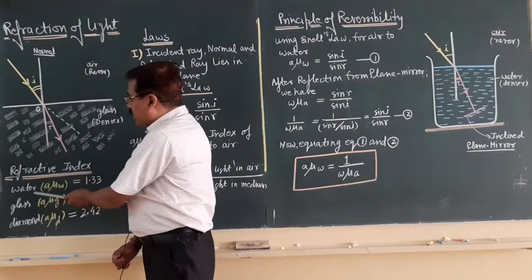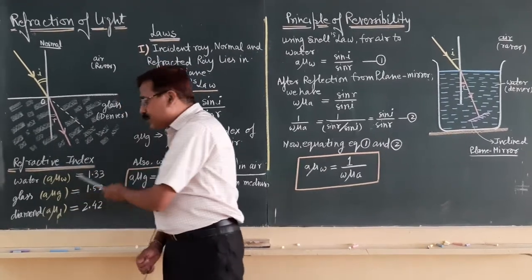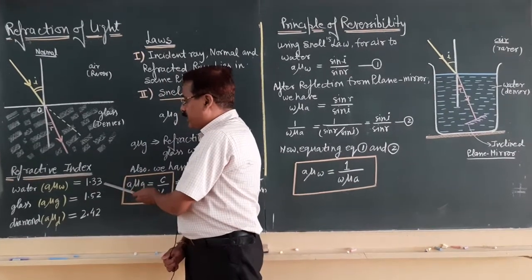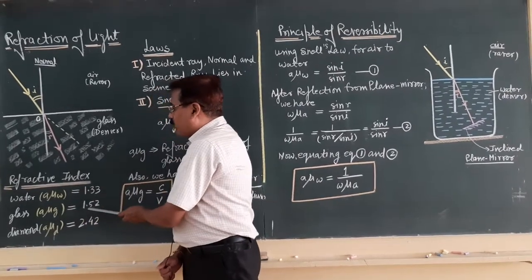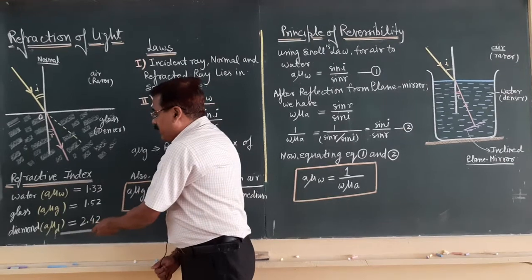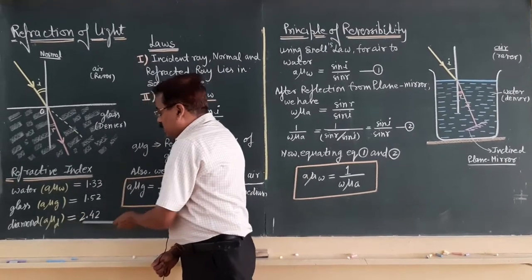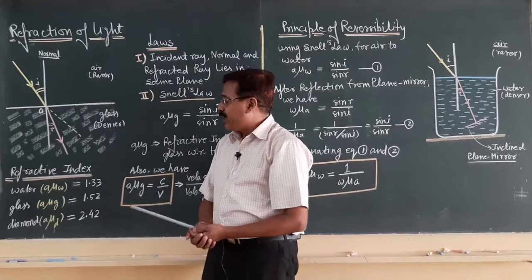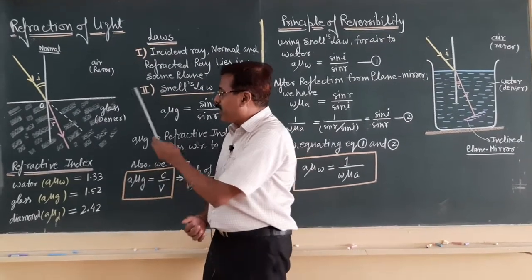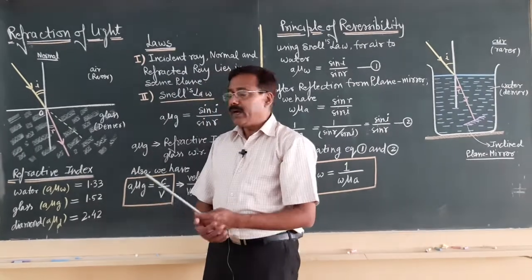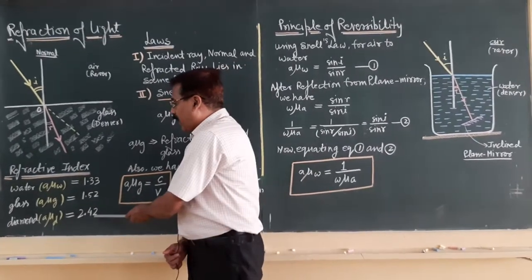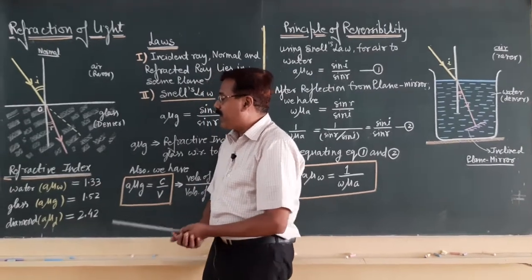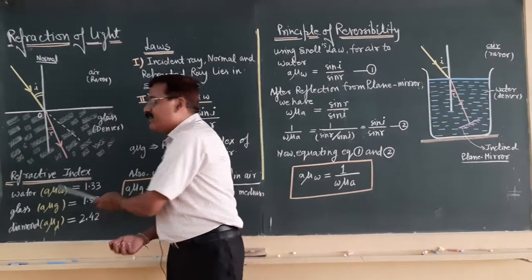The refractive index of water, glass, and diamond with respect to air are: a-mu-w = 1.33, a-mu-g = 1.52, and a-mu-d (where d stands for diamond) = 2.42. You can clearly see that when light travels from air into these three media, the maximum bending will occur in the case of diamond, because diamond's density is much higher than that of water and glass.